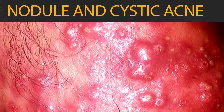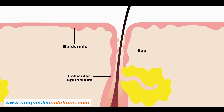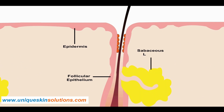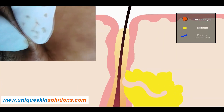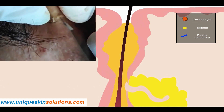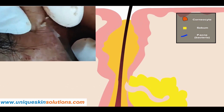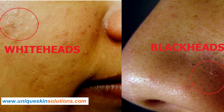Comedones are the initial step of the acne process. There is an increase in cell turnover at the upper sebaceous follicles, leading to clogging of the hair follicles. Increased androgens stimulate excess sebum production. Shed keratin and dead cells, along with sebum, accumulate inside, leading to comedones.